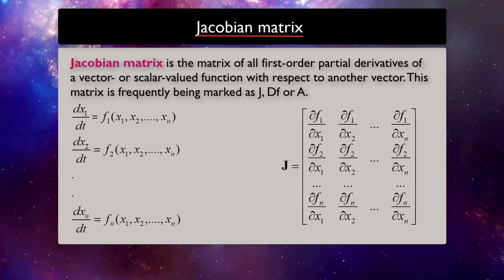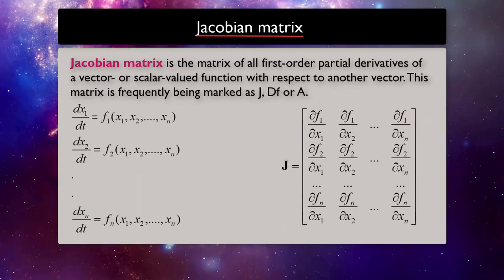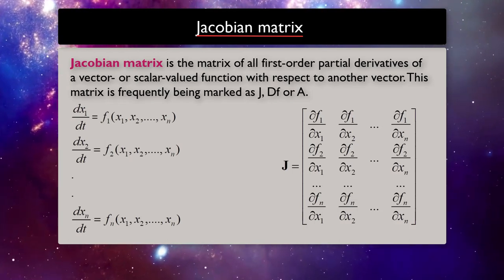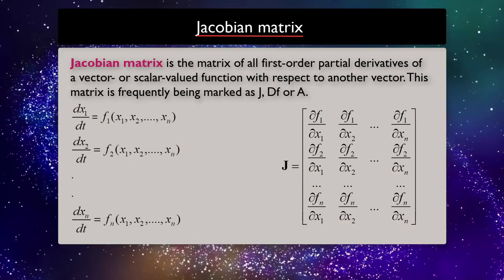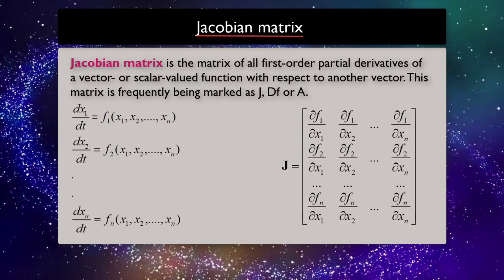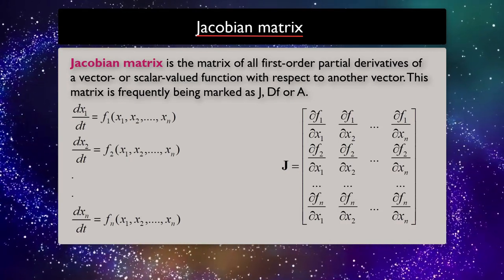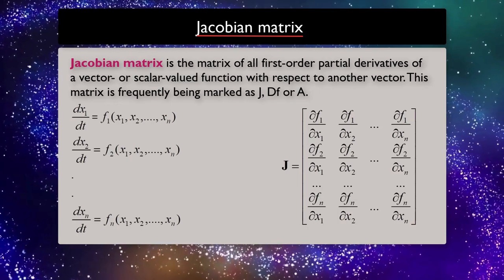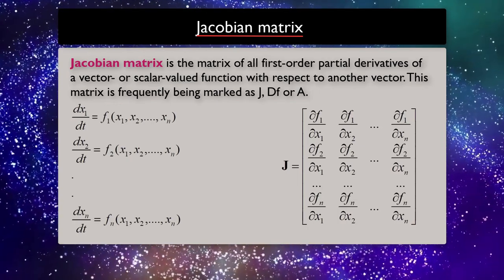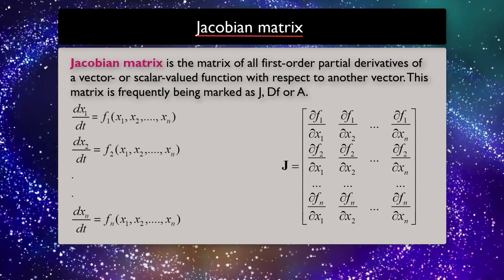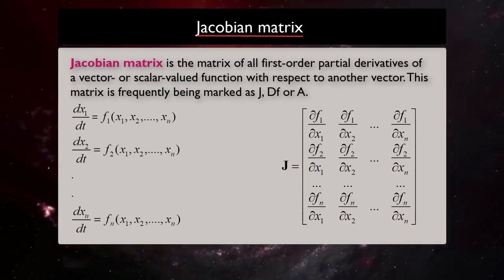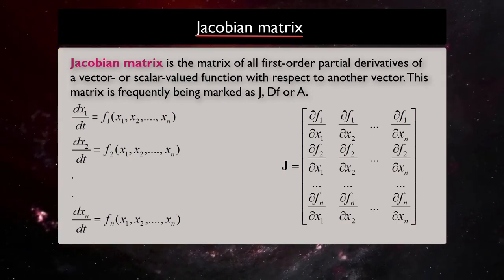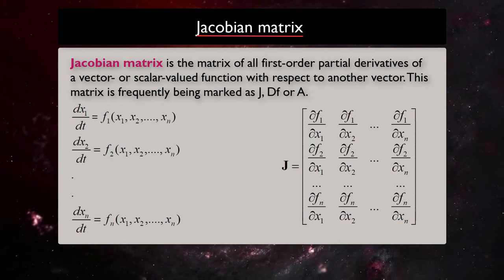Before going forward, we need to define Jacobian matrix. Jacobian matrix is the matrix of all first-order partial derivatives of a vector or a scalar-valued function with respect to another vector. This matrix is frequently being marked as J, D, F, or A, and it's used to classify fixed points of higher-order linear dynamical system.